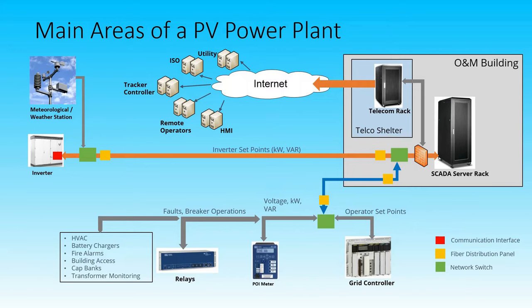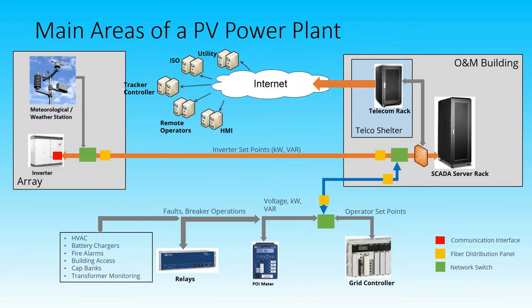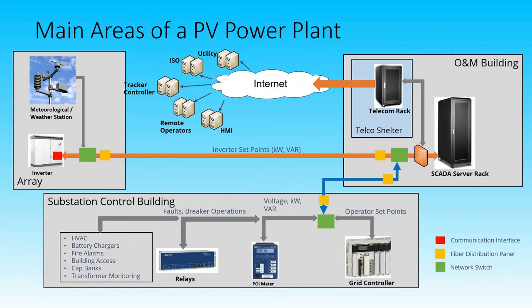In this slide, we can associate those equipment to their physical location in the PV plant. Namely, the operations and maintenance building on the right, wherein we would typically place those SCADA servers and telecommunication equipment. Your array on the left, which are field devices located out in the field, like inverters, solar panels, weather stations, and trackers. And you have your substation control building at the bottom, where you have your relays and grid controllers.